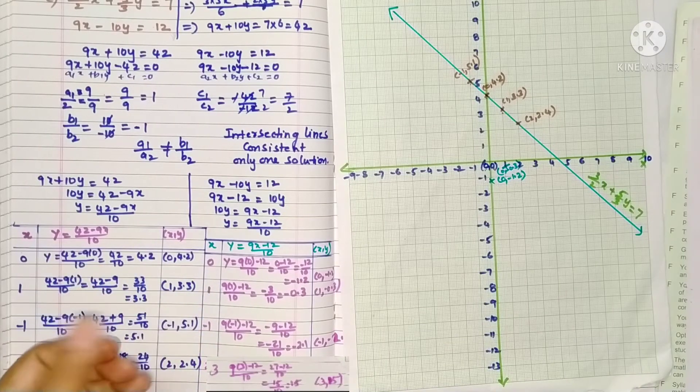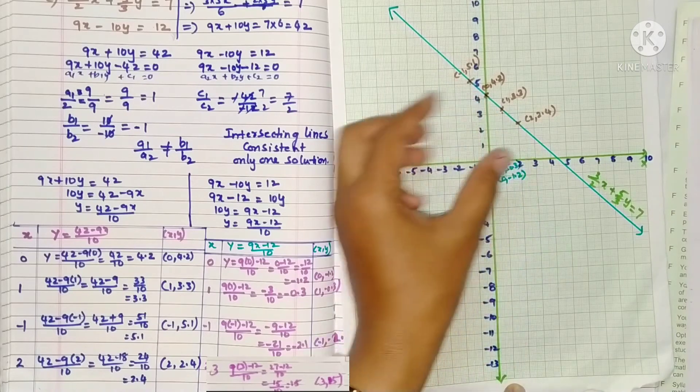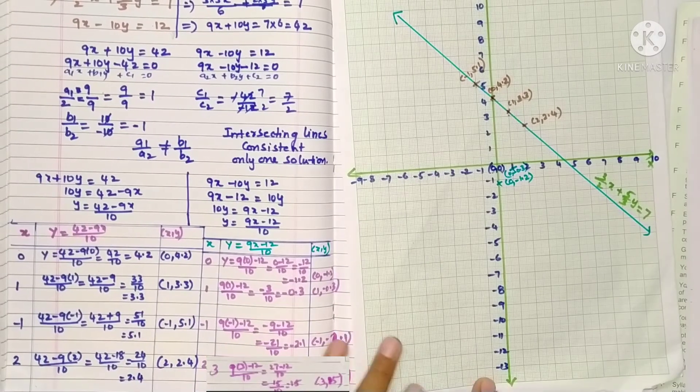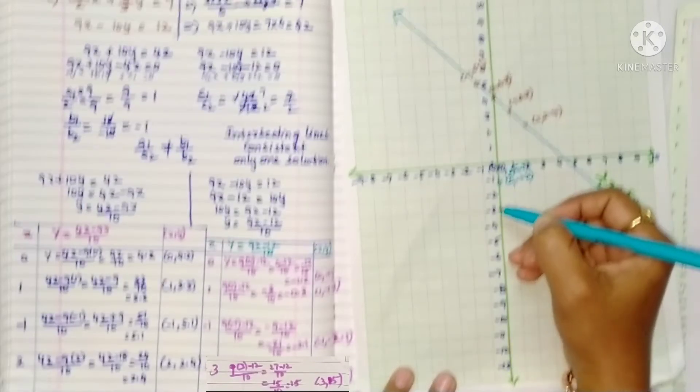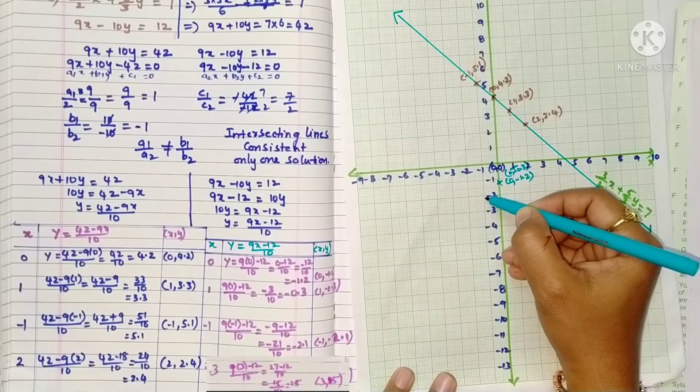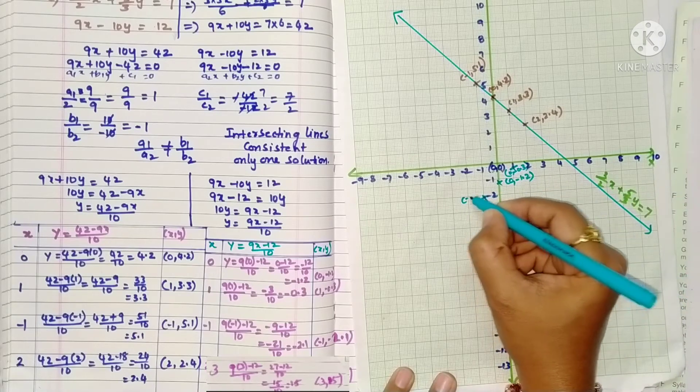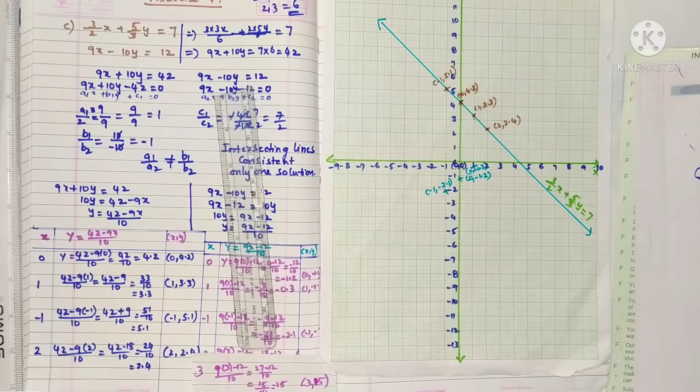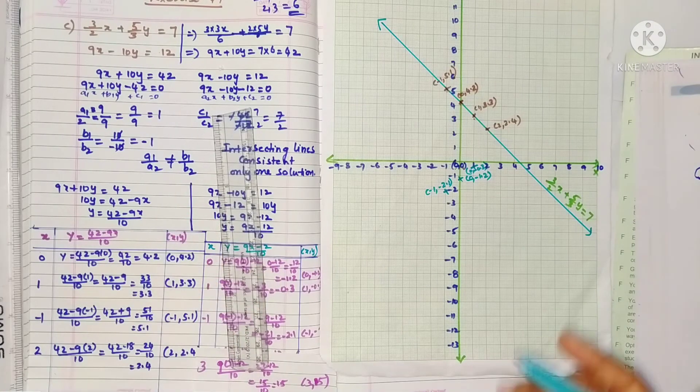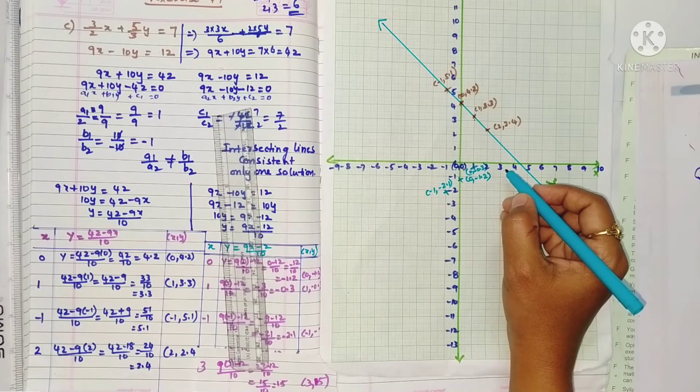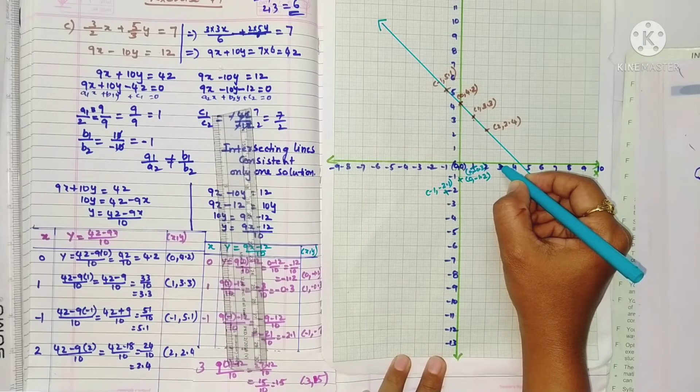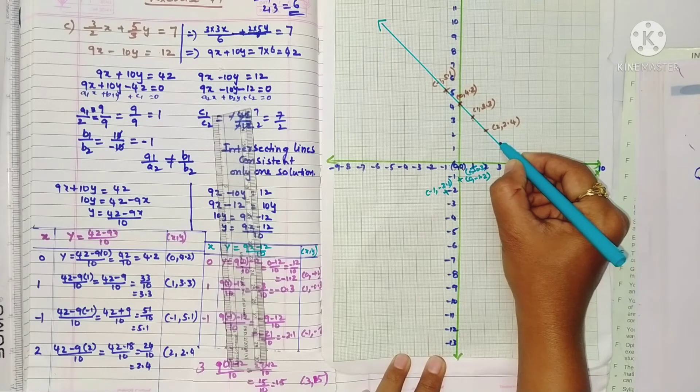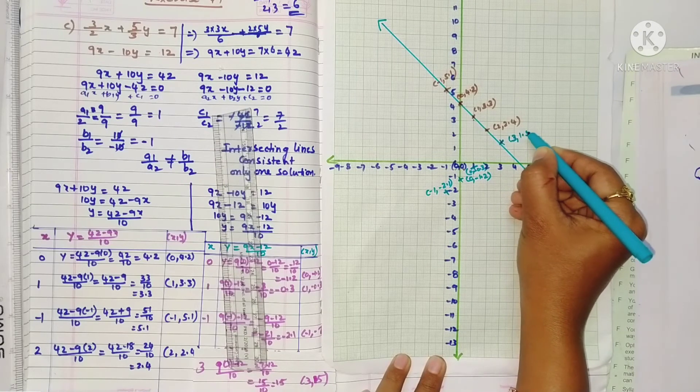We're taking all small values: 1, minus 1, 2, like that. So the points will be close together. Next minus 1 comma minus 2.1. x value minus 1, y value minus 2.1. That means after 2, one line. So minus 1 comma minus 2.1. Next, last point, 3. x value 3, y value 1.5. On the x-axis 3, and on the y-axis 1.5, between 1 and 2, the 5th line. So 3 comma 1.5.